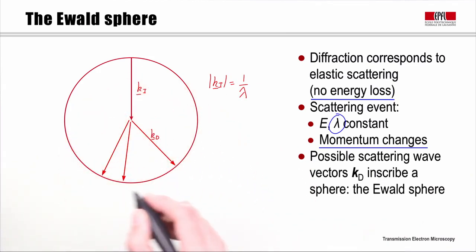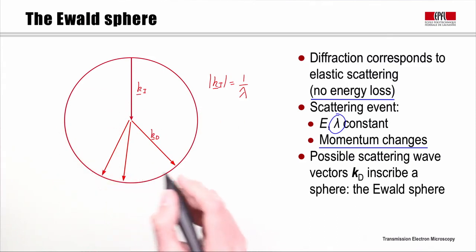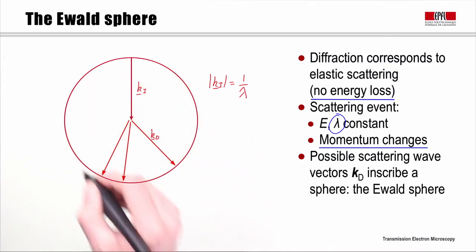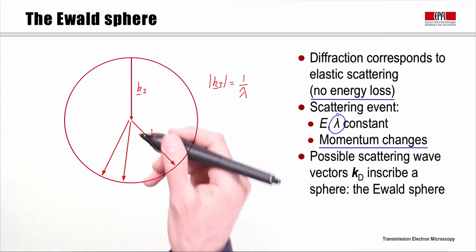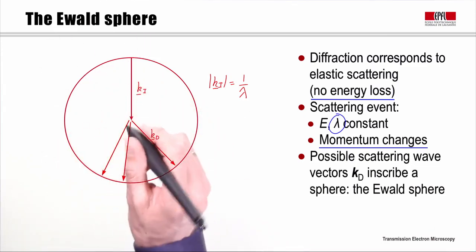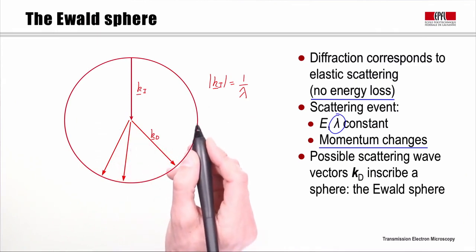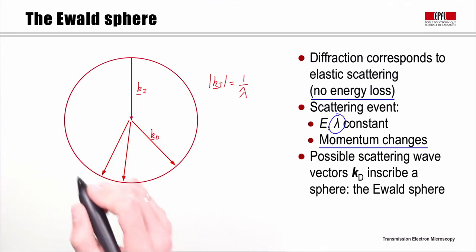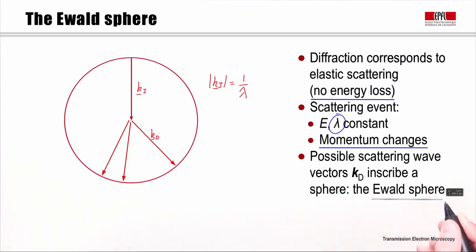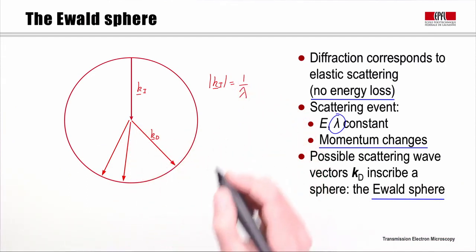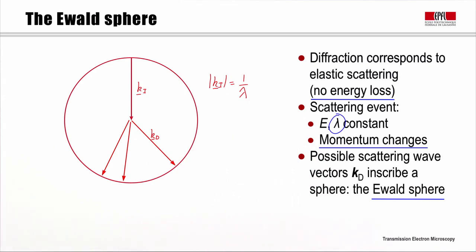Looking just at this plane of scattering, we can see that all these different possible scattering wave vectors will inscribe a circle. That's just looking at one plane. However, we could also have diffraction out of plane. And if we consider the out-of-plane scattering wave vectors, we can see that together they will inscribe a sphere. This sphere of possible diffracted beam wave vectors is called the Ewald sphere. Since the radius of the Ewald sphere has a length of 1 over lambda, we can see that the Ewald sphere has reciprocal dimensions, and we're now going to interact this sphere with the reciprocal lattice.